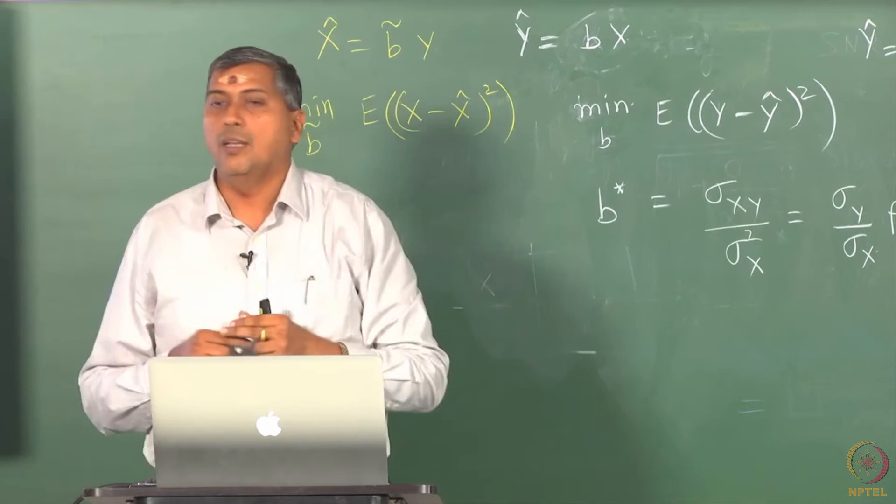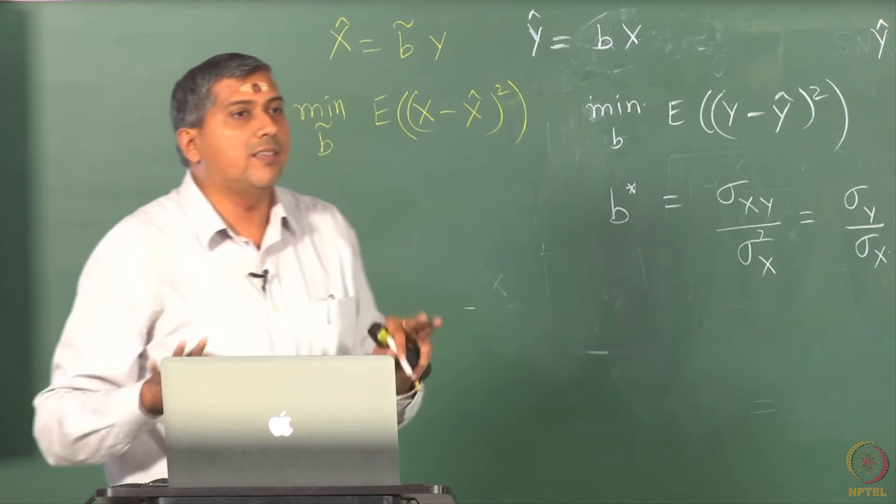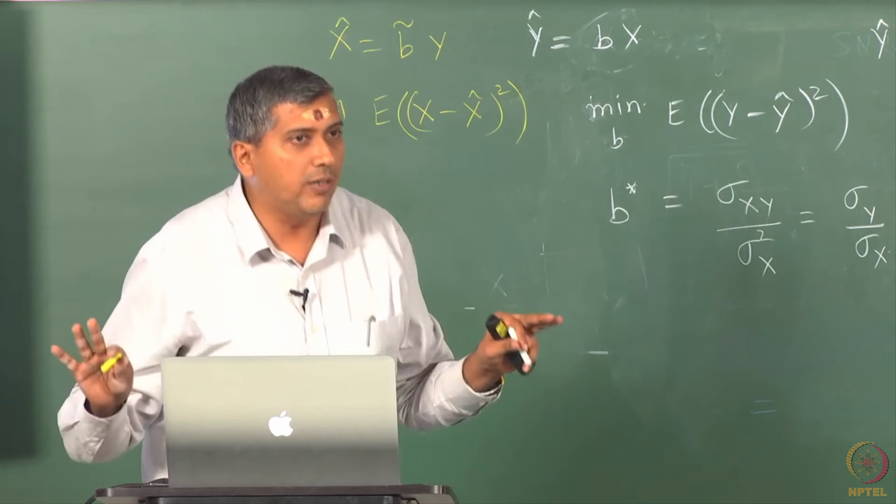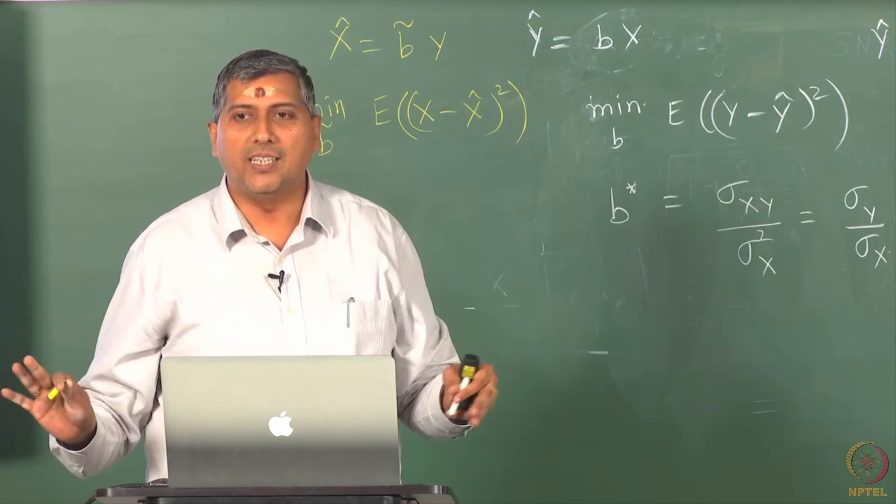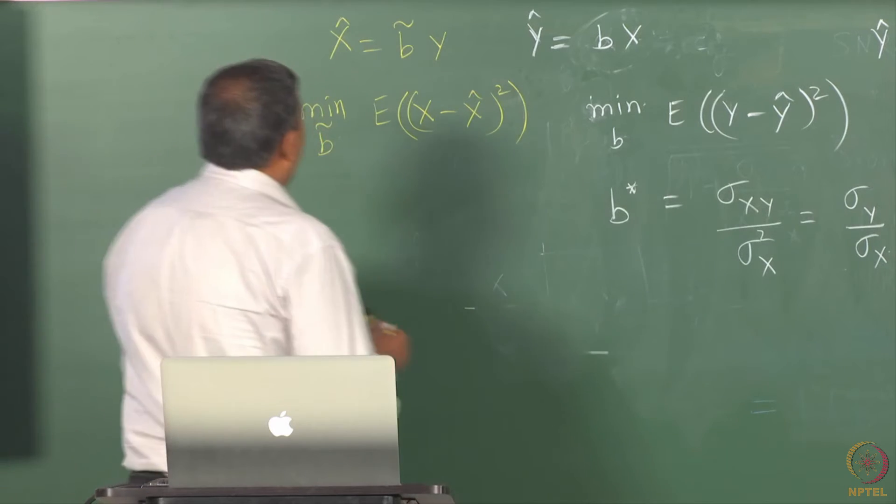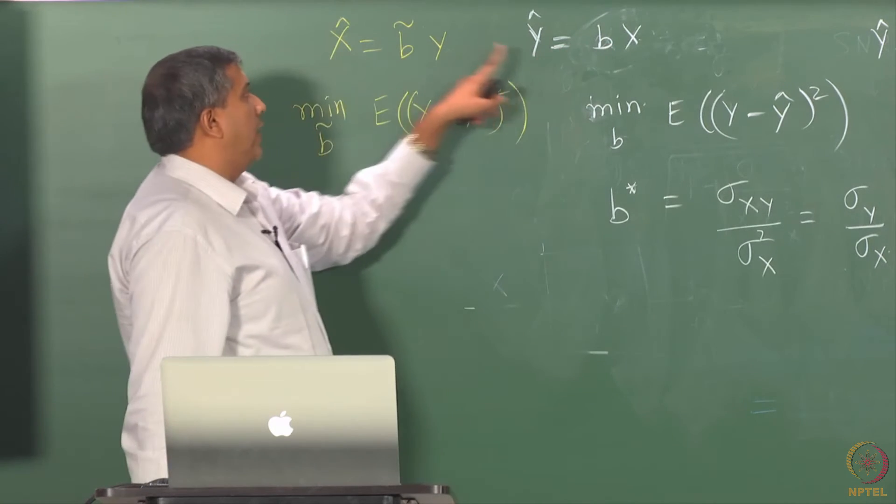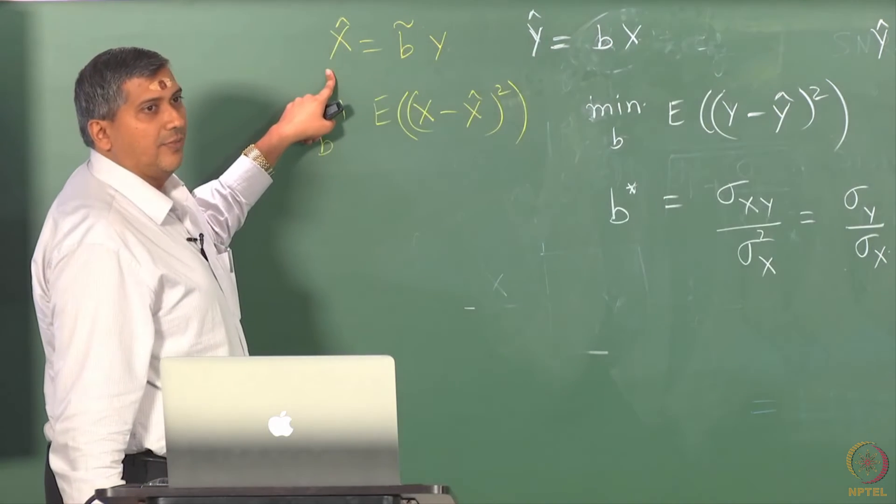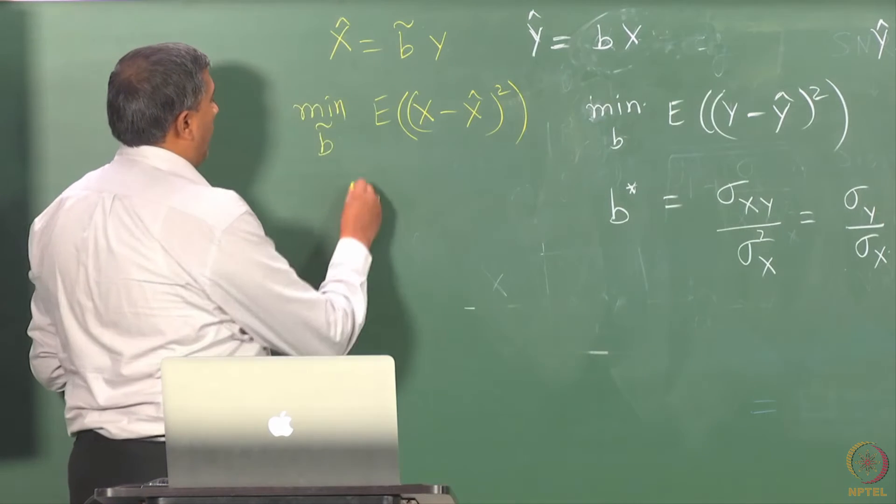the mean square prediction error is minimized. So you can think of this as some kind of a forward model if you like, and this as a reverse, or you can think of this as a forward and this as a reverse. It does not matter because at this moment we have not said whether x is the cause and y is the effect. I do not really worry about that. I am given one, I want to predict the other.